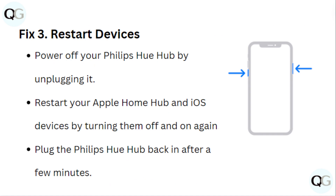3. Restart devices. Power off your Philips Hue Hub by unplugging it. Restart your Apple Home Hub and iOS devices by turning them off and on again. Plug the Philips Hue Hub back in after a few minutes.